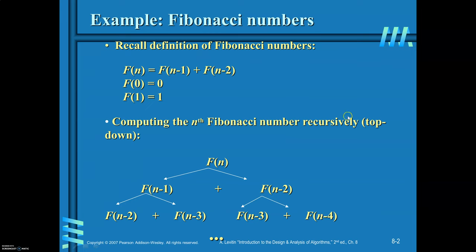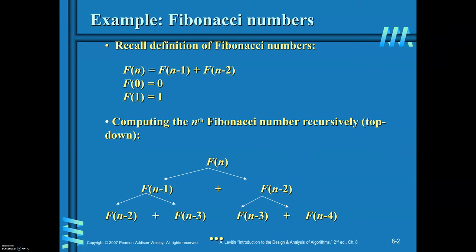Next we will see how to solve Fibonacci numbers using dynamic programming. You already know the recursive definition for finding the nth Fibonacci number: F(n) = F(n-1) + F(n-2), with base conditions F(0) and F(1). In a recursive call, it will be called for F(n), then F(n-1), F(n-2), terminating at F(0) or F(1). This is called the top-down approach, and it results in many overlapping sub-problems.